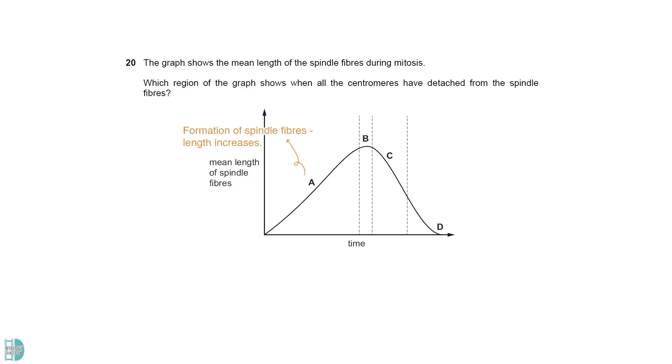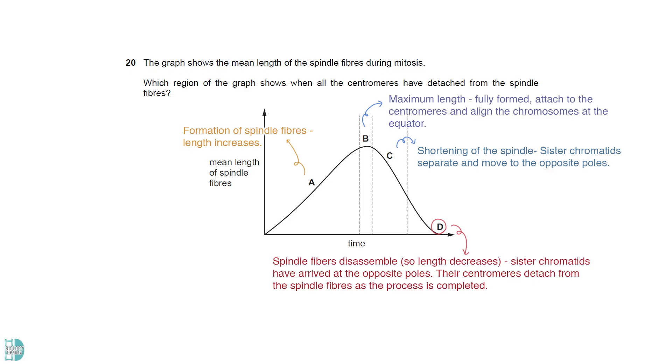A shows the formation of spindle fibers, hence the increasing length. B is when they reach maximum length. This is when they attach to the centromeres and align the chromosomes at the equator. C shows the shortening of the spindle. Sister chromatids separate and move to the opposite poles. D is the end of mitosis. Spindle fibers disassemble, hence the decreasing length. Sister chromatids have arrived at the opposite poles. This is when their centromeres detach from the spindle fibers as the process is completed.